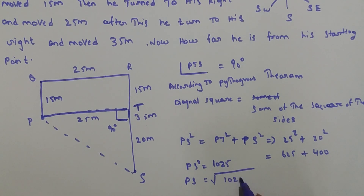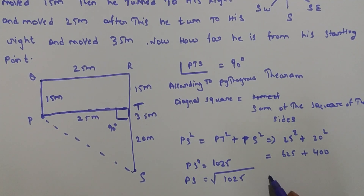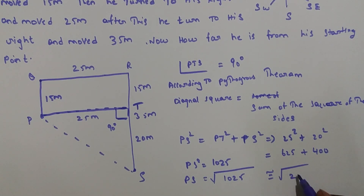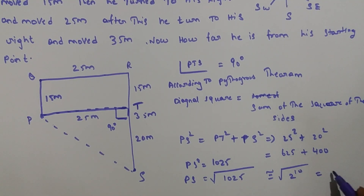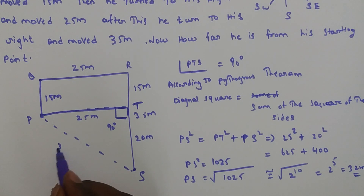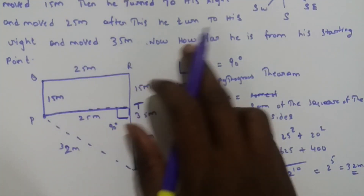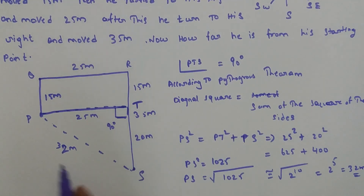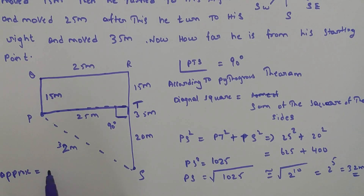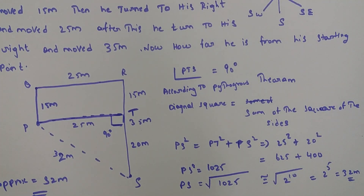PS squared is equal to 1025. So PS is equal to the square root of 1025. Approximately, 2 to the power of 10 equals 1024, and the square root of 2 to the power of 10 is 2 to the power of 5, which equals 32 meters. So he is approximately 32 meters from the starting point. Thank you for watching this video — if you like it, please subscribe.